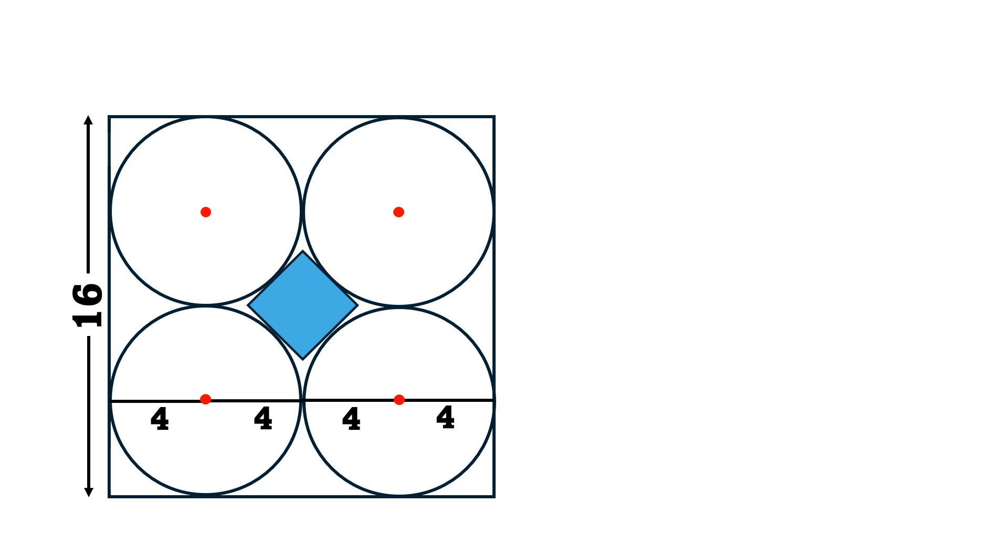Let's join the centers of 3 circles which form a right triangle. In this right triangle, the legs of the right triangle are 8. Then it is very much clear that the hypotenuse of this right triangle is 8 square root of 2.